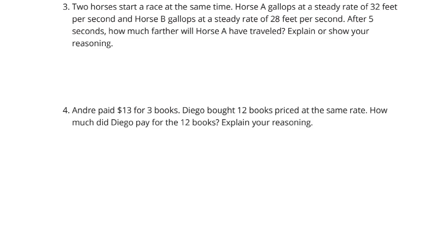Well, you could use number lines. You could use tables. Let's go ahead and start with a table here. If we have horse A, horse B, and we'll call this the diff, the difference. And it might help here to have a column as well for time. So after 1 second, horse A has traveled 32 feet per second. Horse B has traveled 28 feet per second. And right now we have a difference of 4 feet.